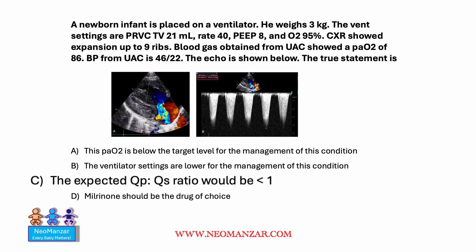Let's walk through why the others are not the right choice. For example, the first one — the PaO2 here is about 86. We always have this notion that the PaO2 has to be kept above 100, but that has been refuted, as I will show in the reference. A range between 50 to 80 should be acceptable. So that's why option A is wrong.